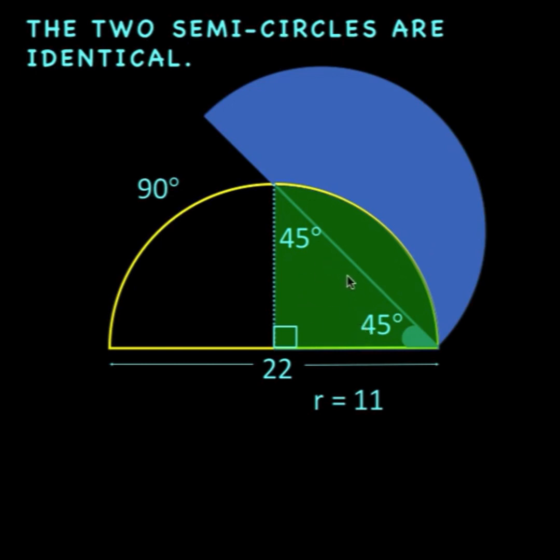So if the radius of the quarter circle is 11 units, then we can easily find the area of this green sector. The area of this green sector must be π r² divided by 4, where r is 11.